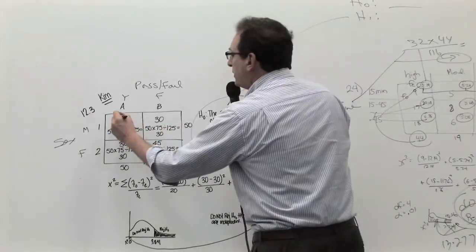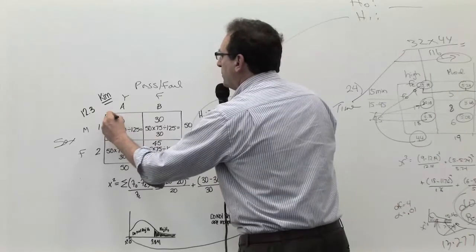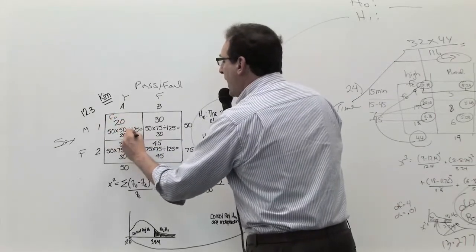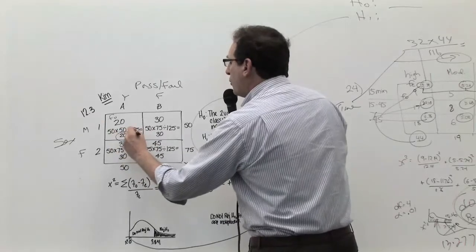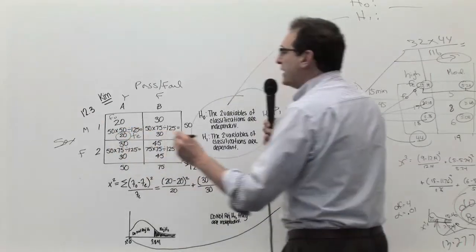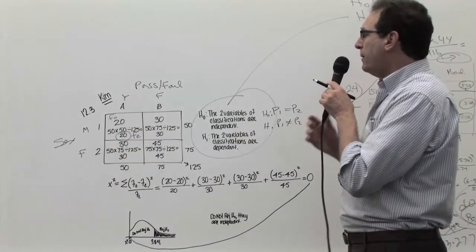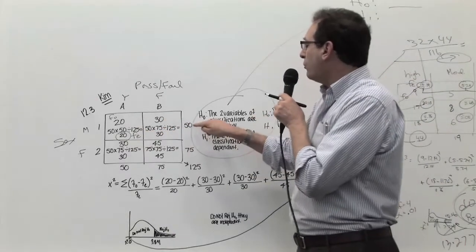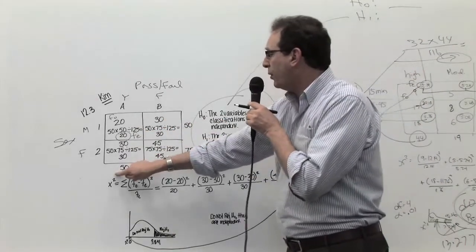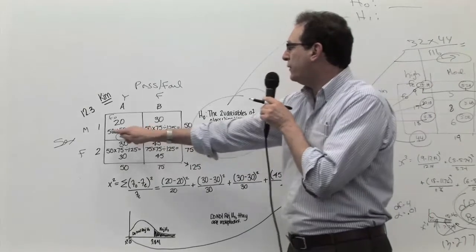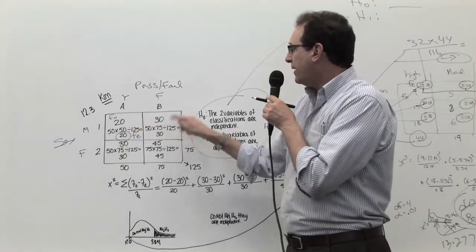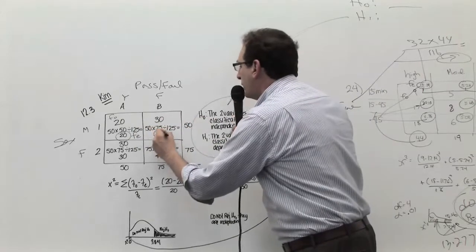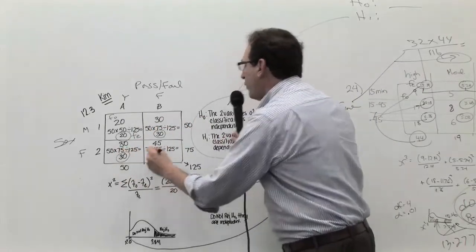Well again, we calculate that this is called the F observed, and the number in the circle is called the frequency of the expected. Kim put down the actual calculation. It's going to be the row total times the column total divided by the grand total, so it's 50 times 50 divided by 125, which comes out to 20. And likewise, these other numbers, the number in the circle here is 30, 30, and 45.